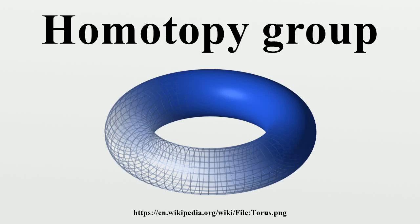That link between topology and groups lets mathematicians apply insights from group theory to topology. For example, if two topological objects have different homotopy groups, they can't have the same topological structure, a fact that may be difficult to prove using only topological means. For example, the torus is different from the sphere: the torus has a hole, the sphere doesn't. However, since continuity only deals with the local structure, it can be difficult to formally define the obvious global difference.